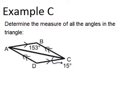Example C: determine the measure of all the angles in the triangle. We have that angle B is marked as 153 degrees, and angle ACD is 15 degrees. We also have parallel lines, which means we have alternate interior angles to work with. The 15-degree angle is alternate interior with the angle on the other side, so that angle also has to be 15 degrees.